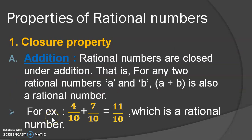Now let us discuss the various properties which are applicable on the rational numbers. All the properties we are going to discuss on 4 operations: that is addition, subtraction, multiplication and division. The first is the closure property. Let us discuss about the addition of the closure property.